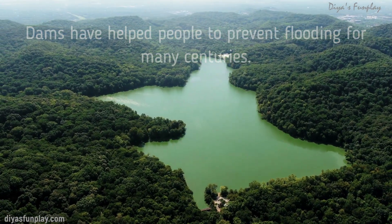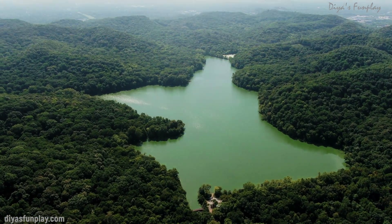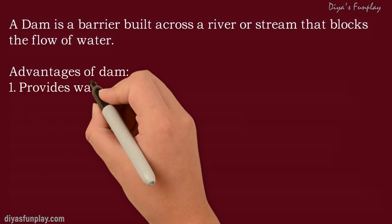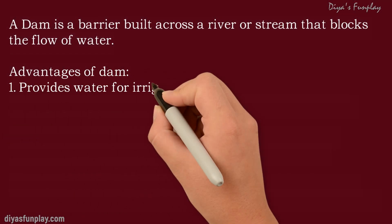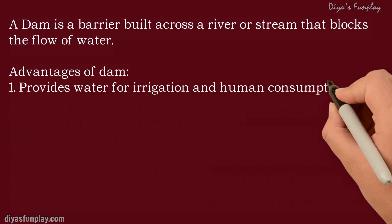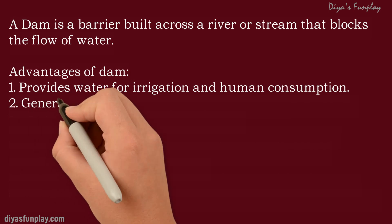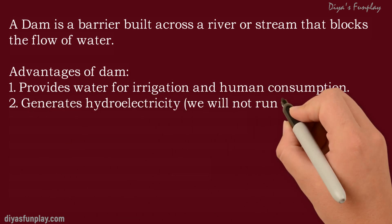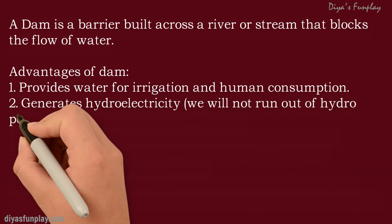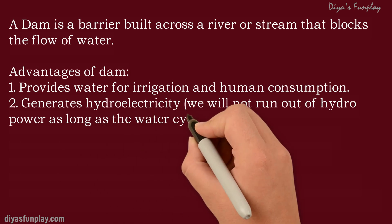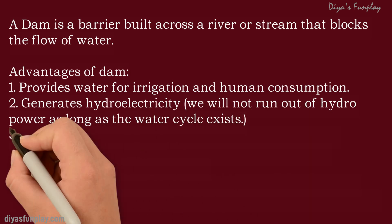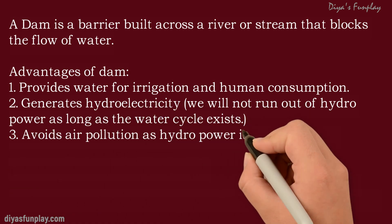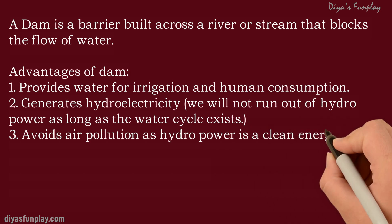Now let's see some important advantages of building a dam. Dams can provide water for irrigation and human consumption. Water dams are used for generating hydroelectricity. We will not run out of hydropower as long as the water cycle exists. Dams help us to avoid air pollution as hydropower is a clean energy.